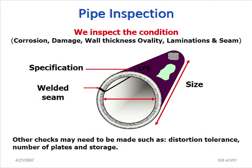Pipe inspection - we inspect the condition. When we receive the pipe at site, we check for corrosion, damage, wall thickness, ovality, lamination, and seam. You have to check the specification: which grade is mentioned, whether it is seamless or which seam type it is. You also check the size and length of the pipe.